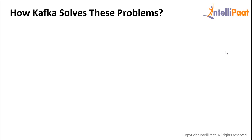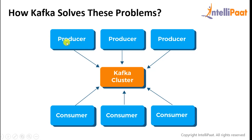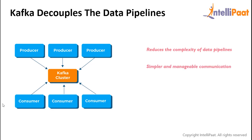This is where Kafka comes in with all the right answers to the above problems. Kafka basically decouples the pipelines. There is a cluster in the center, and then we have consumers which can place a request and producers which send messages. The producers send messages to the cluster, from which the consumers can fetch them. Apache Kafka reduces the complexity of data pipelines and makes communication between systems simpler and manageable. It is also easy to establish remote communication and send data across a network asynchronously. Kafka also ensures that the communication is extremely reliable.